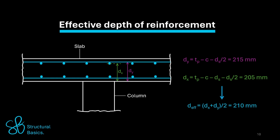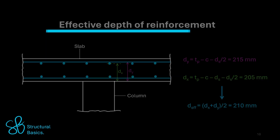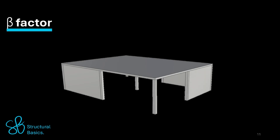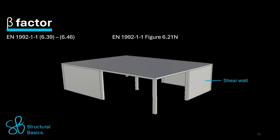Next, the shear force/stress of the slab can be reduced with a beta factor. This beta factor is calculated with formulas 39 to 46 of Chapter 6 in Eurocode 2. If the columns are not used to stabilize the structure, approximate values for beta from Figure 6.21N can be used. In our structure there are shear walls, and therefore the columns are not used for frame action to stabilize the structure, so we'll use the simplified values for beta. For the center column, Eurocode recommends a value of 1.15.